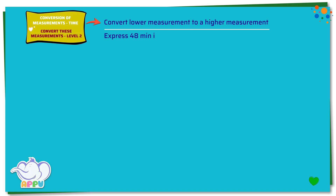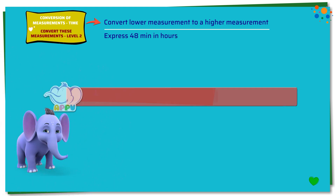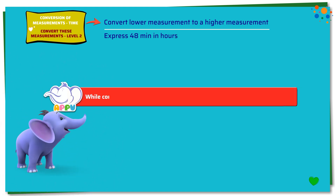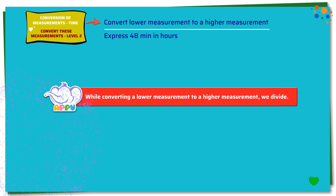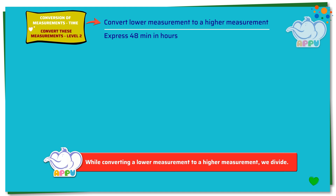Express 48 minutes in hours. While converting a lower measurement to a higher measurement, we divide. Here we need to find how much is 48 minutes in hours. We know that 60 minutes equals 1 hour.